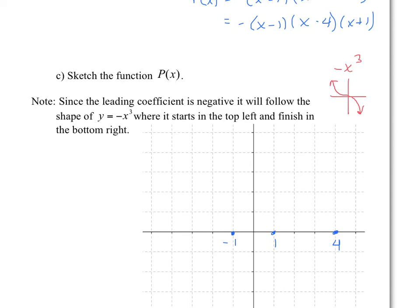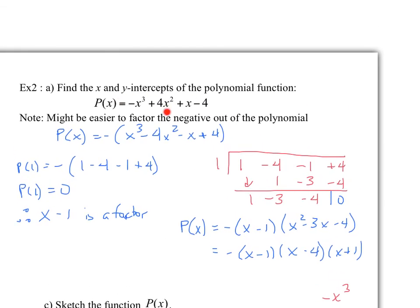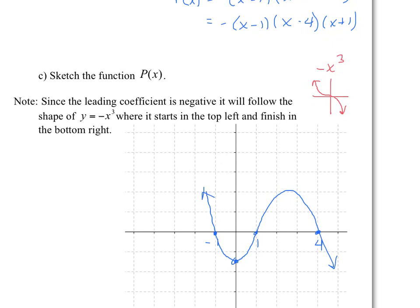I'll follow the shape of negative x cubed: you start from the top, come back around, and finish toward the bottom. There's one more value to add — the y-intercept. Looking at the factored function: one times negative four is negative four, negative four times negative one is positive four, then multiplied by the negative out front gives negative four. So the y-intercept is negative four.